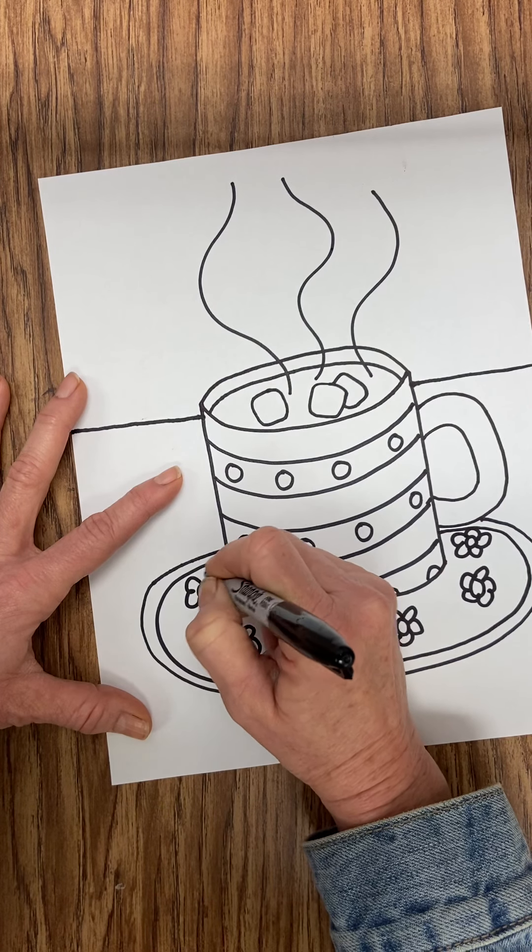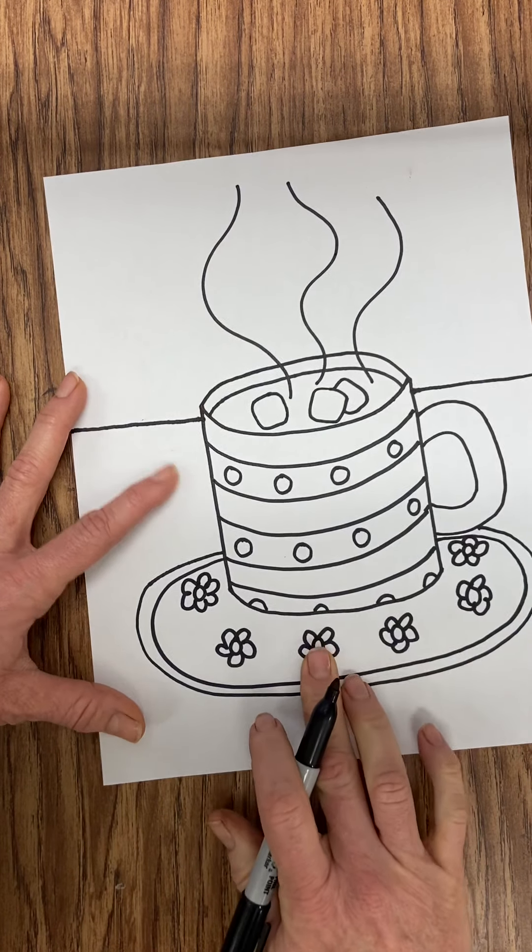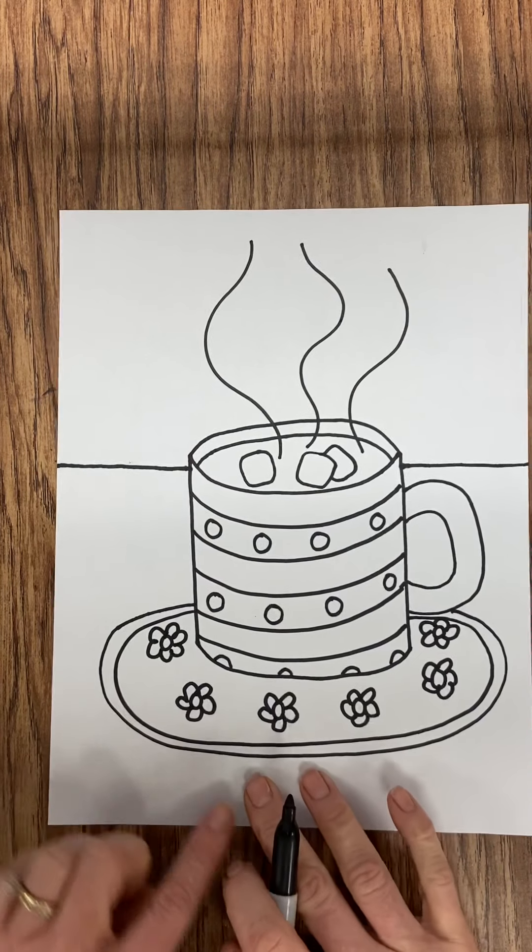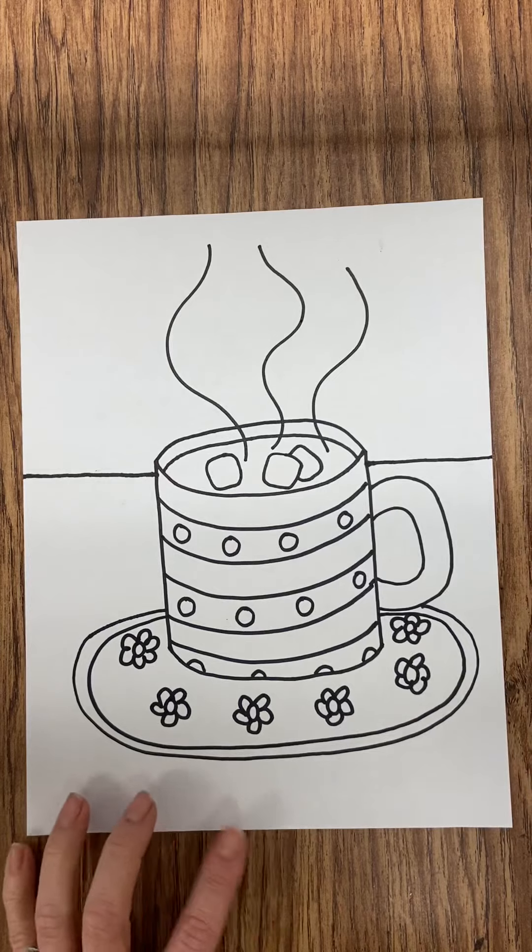After you've designed your mug and saucer, don't forget to do a pattern on your wall and your table. Then carefully add color.